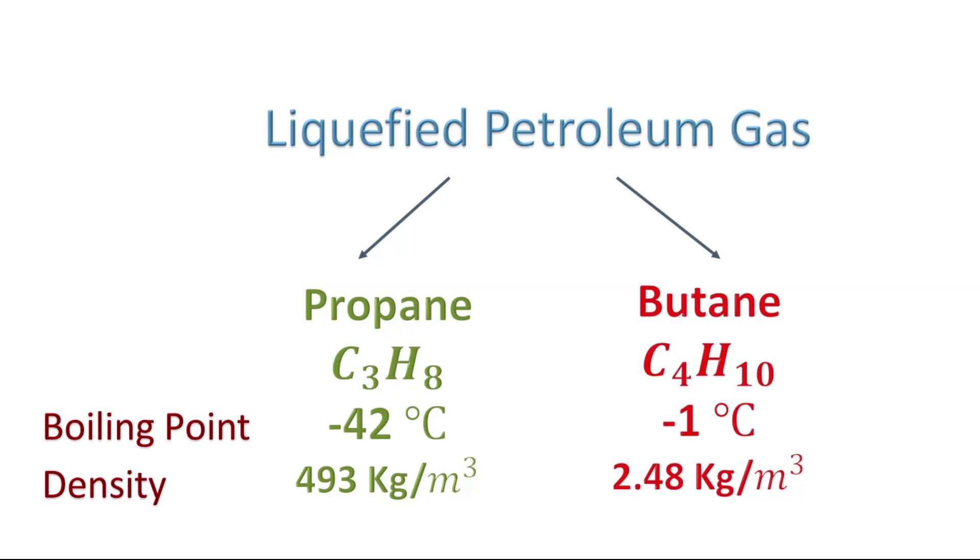As you may know, LPG has low boiling points. Butane and propane are gases at normal temperatures and pressure, but become liquid when compressed to higher pressure.